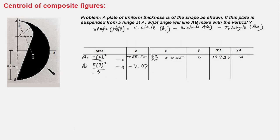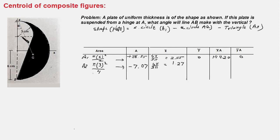The x̄ for this quarter circle is also 4r/3π, and with r = 3 cm this works out to 1.27. ȳ would also be 1.27 from the quarter circle's own axis, but since we measure from the dotted reference line, we add 3 cm, so ȳ = 3 + 1.27 = 4.27.